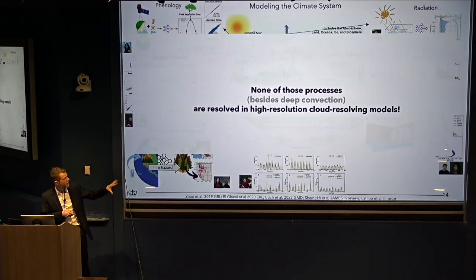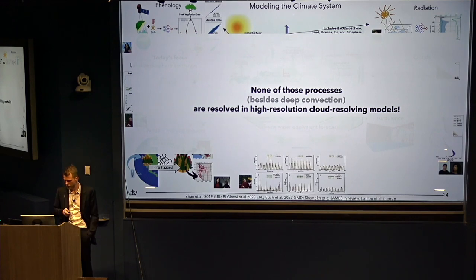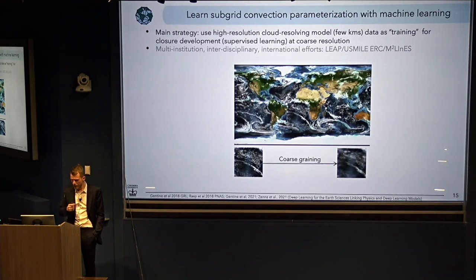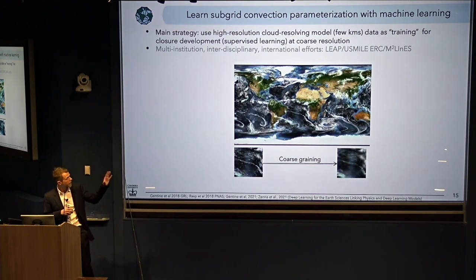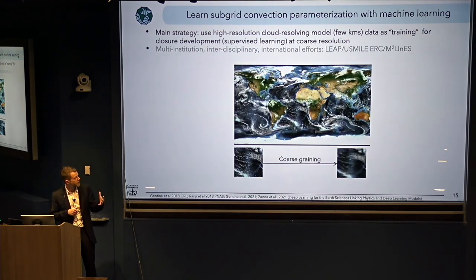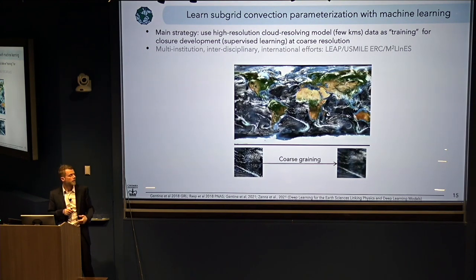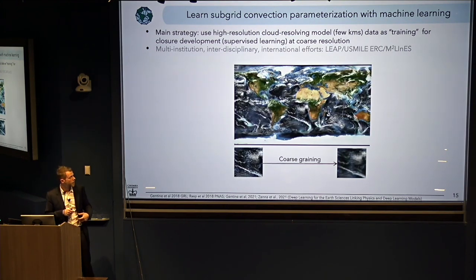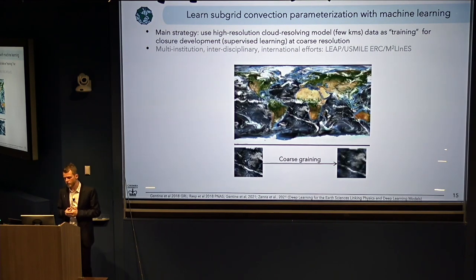Many of those processes are not resolved even when we go to higher resolution. It's more than just resolution — it's also understanding how those processes are actually functioning. So the first thing we're going to do is look at: can we actually replicate precipitation? I showed you before that precipitation tends to be very poorly represented in Earth system models and climate models. Can we do a better job at representing those processes?